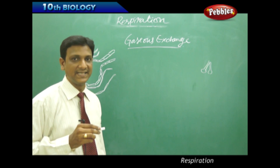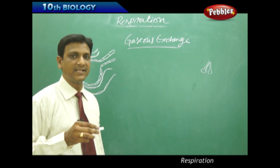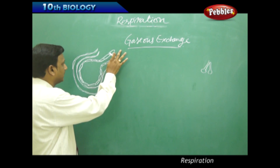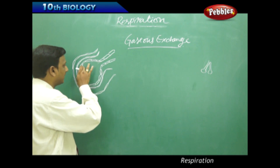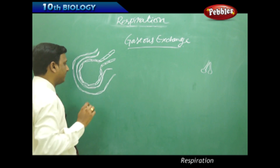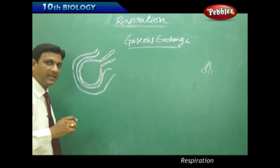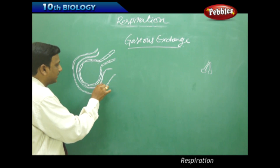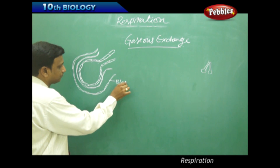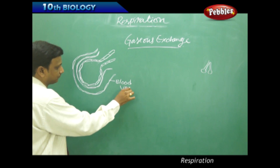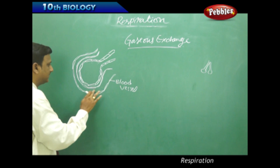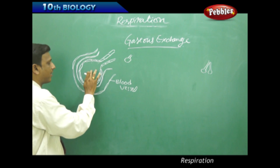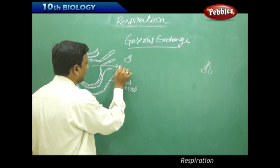These alveoli are one cell thick — very thin, with only one cell in their covering. You can see that this is the bronchial extending, and here is the sac-like structure called alveoli. This alveoli is very closely associated with, and adjacent to, a blood vessel.